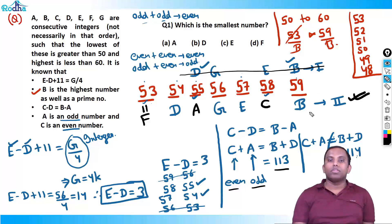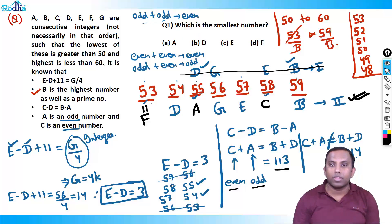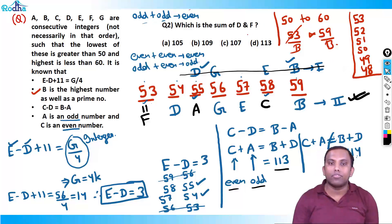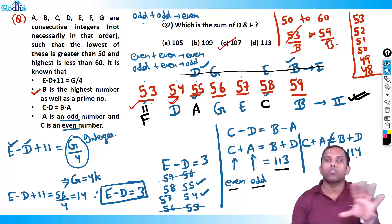Now we can answer the questions. Question 1: Which is the smallest number? The smallest number is 53, which is F. So F is the answer. Question 2: What is the sum of D and F? D is 54, F is 53 — 54 plus 53 equals 107. So the sum of D and F is 107.